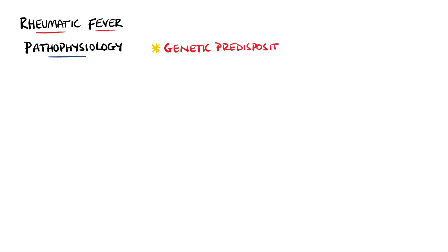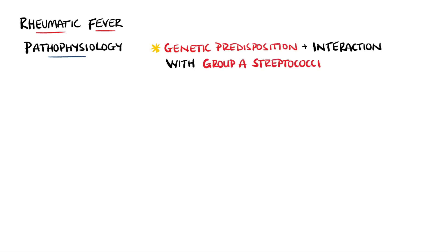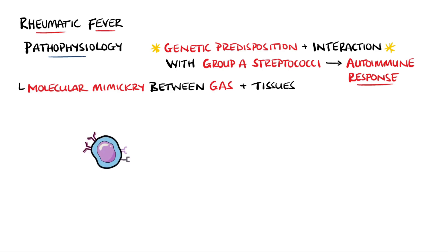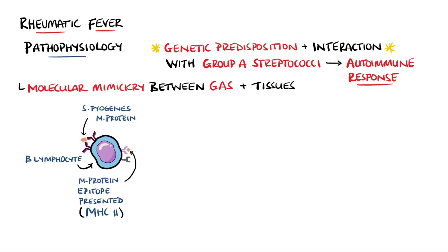Rheumatic fever is an autoimmune condition which results from an individual that is genetically predisposed and an interaction with group A streptococci, which commonly comes from a throat infection. It is thought that the cross-reactive immune cells come from molecular mimicry between group A streptococcus antigens and molecules present in the individual's tissues. Streptococcus pyogenes is one of the most common agents involved.